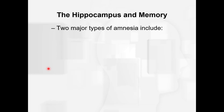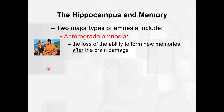There are two major types of amnesia. The first is anterograde amnesia — the loss of ability to form new memories after brain damage. Think about the movie Fifty First Dates: Drew Barrymore couldn't remember anything after her traumatic brain injury. She had this inability to form new memories after the brain damage going forward.